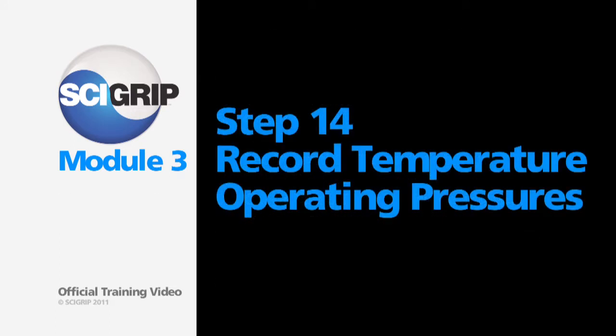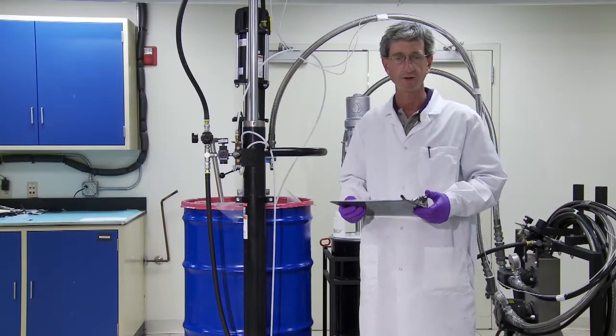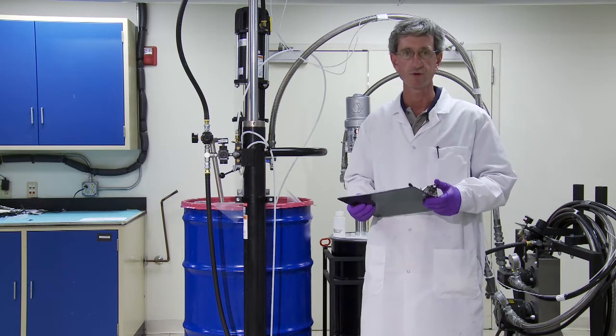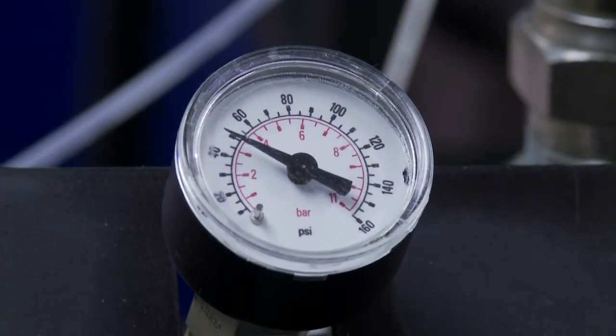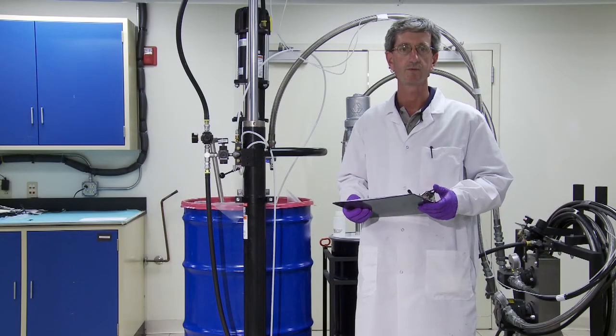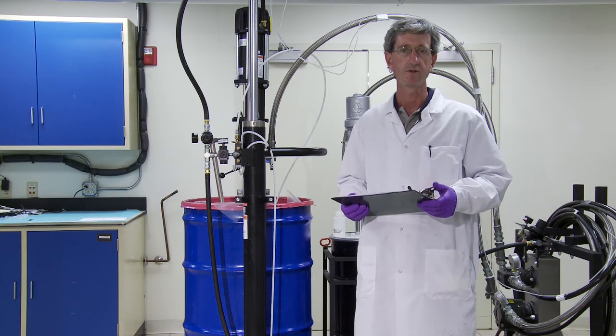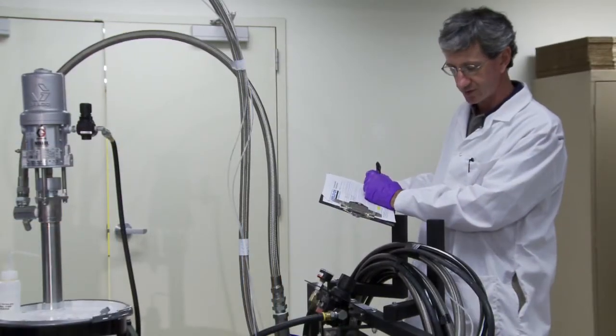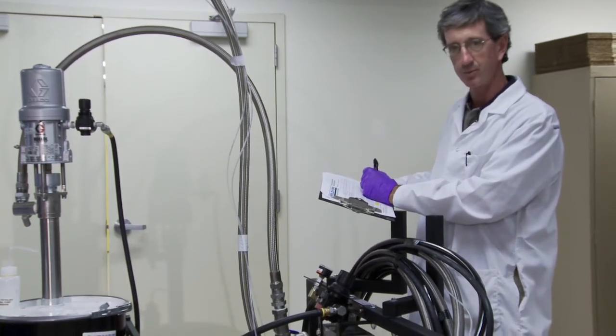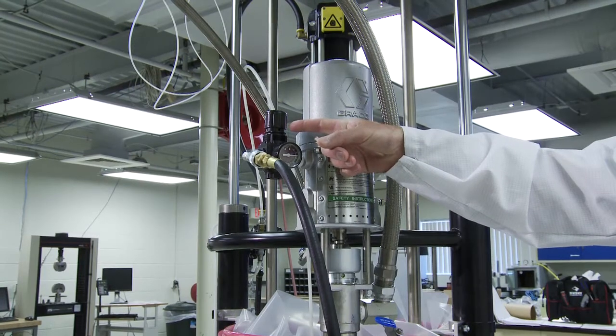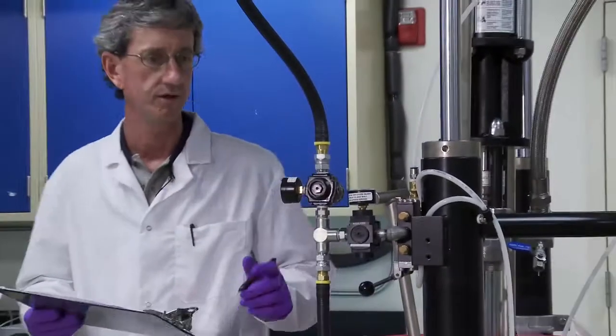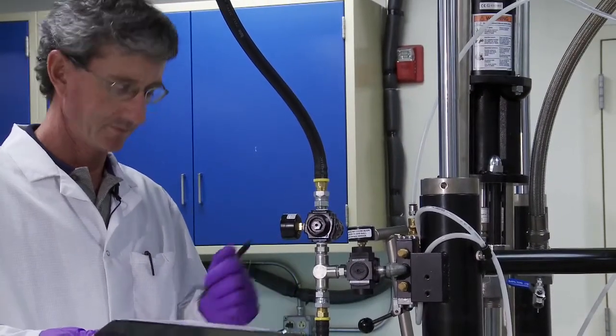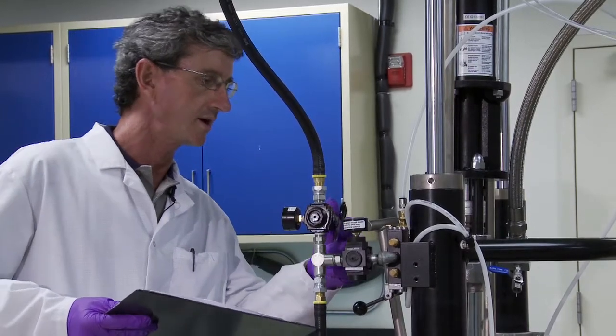Step 14, the final step. Record ambient temperature and operating pressures. It's a good practice to record your ambient temperatures and operating pressures when the system is up and running. This enables you to track seasonal effects and also enables you to identify mechanical problems or adhesive problems should they crop up by seeing deviations from the trend. So now I'm recording the line pressures on the adhesive and the activator lines at the output of the metering pumps. And I'll record the pressure settings on the transfer pump regulators as well as the adhesive transfer pump regulator and the ram regulator.